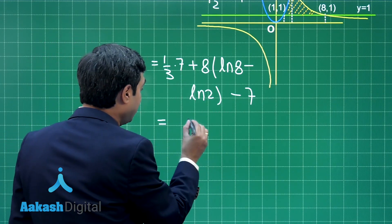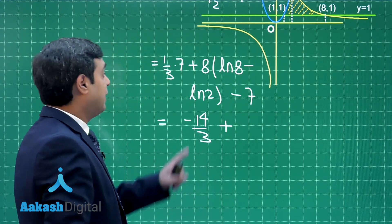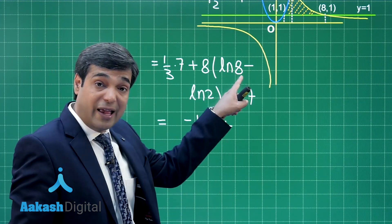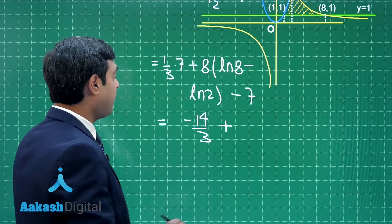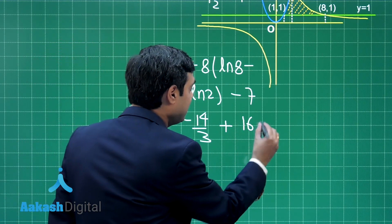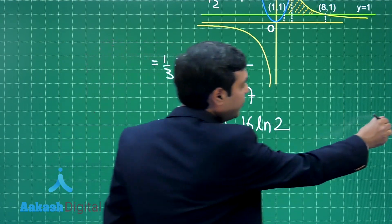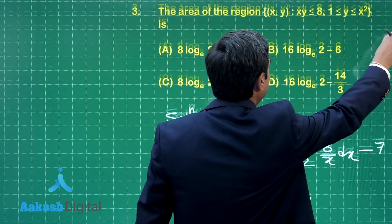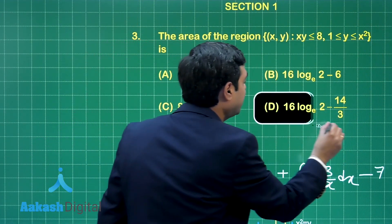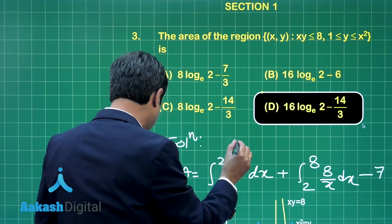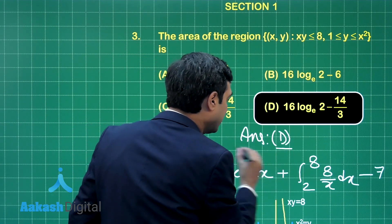So, we have 7 minus 21 that is minus 14 by 3 plus log 8 can be written as 3 log 2 minus log 2. So it is 2 log 2 multiplied with 8 it is 16 log 2. Right. So, let us see from the given options the correct answer 16 log 2 minus 14 by 3 is available here as option number D. So, let us mark it as our correct answer.